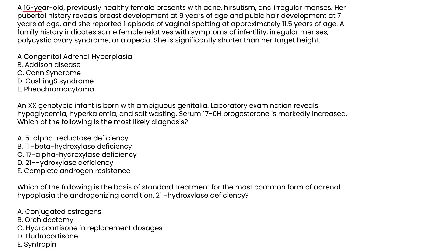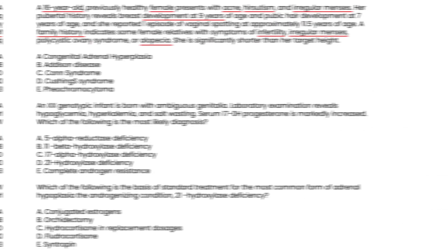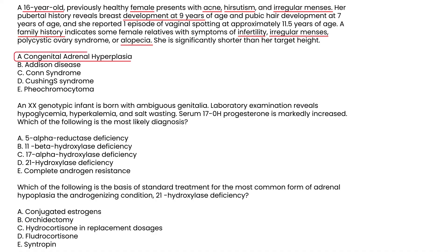Vignette 1: A 16-year-old previously healthy female presents with acne, hirsutism, and irregular menses. Her pubertal history reveals breast development at age 9 and pubic hair development at age 7, with one episode of vaginal spotting at approximately 11 to 11.5 years of age. Family history indicates female relatives with infertility, irregular menses, PCOS, or alopecia. She is significantly shorter than her target height. This vignette presents many signs of virilization, and choice A — pointing toward CAH — is the correct answer.